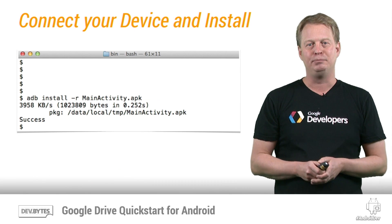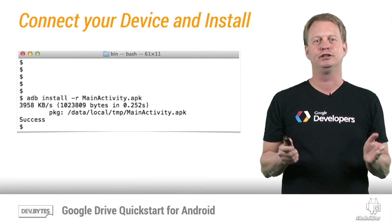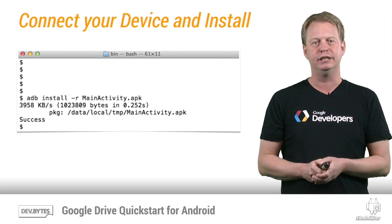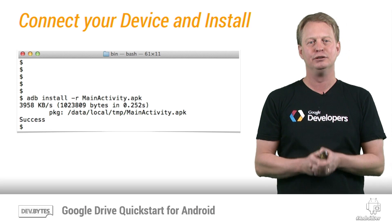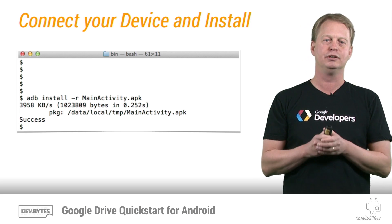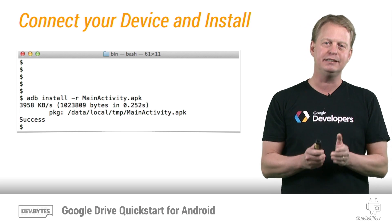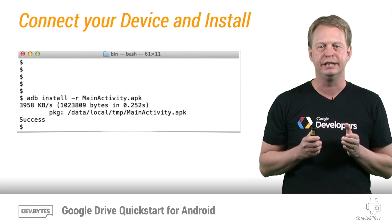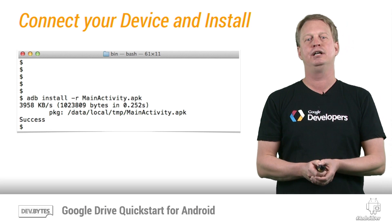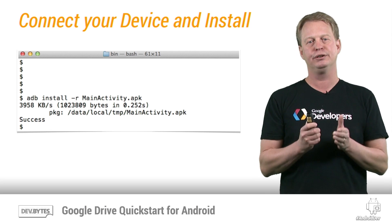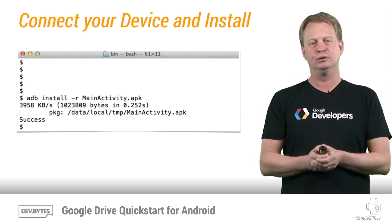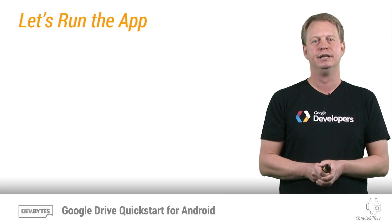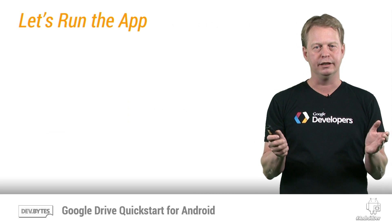I will demo the app on a real physical device. In order to do this, I must transfer the APK to the actual device. This can be performed by connecting the device and then using the ADB command from the Android SDK to transfer the APK that we previously built. All done.